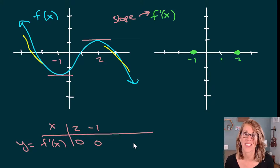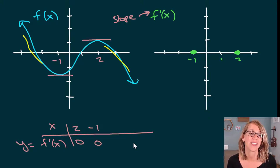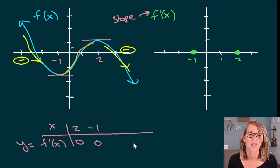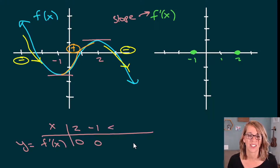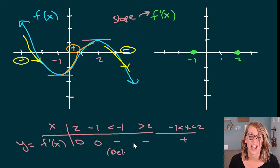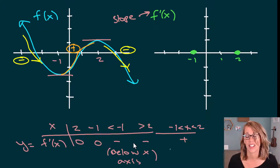Next I want to figure out where the slopes of f(x) are negative. I've marked those in yellow — my graph is going down there, so I'll have negative slopes for all of those values. So less than negative 1 is going to be negative, and greater than 2 is also negative. In between negative 1 and 2 the slopes are going to be positive. Wherever I've got something negative, it will be below the x-axis on my derivative graph; wherever I've got a positive, it will be above.